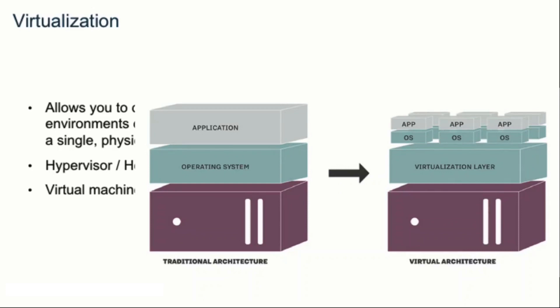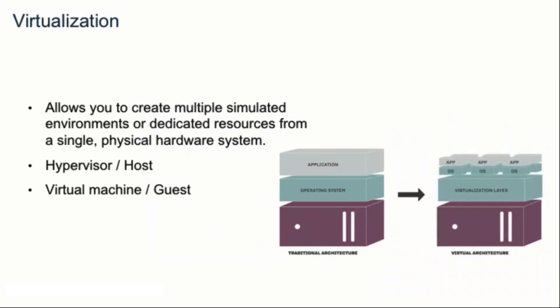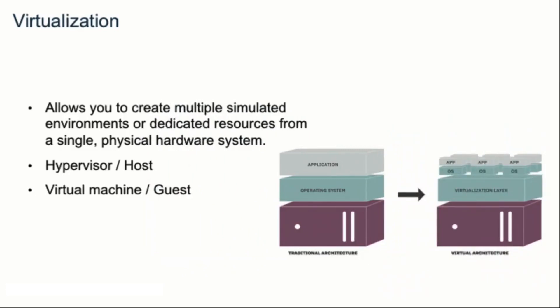On the right side of the image, you will see a virtual architecture where you have your hardware on the bottom. On top of that, you have your virtualization layer — this could be software. And on top of that, you have your OS and the application for every single virtual machine. So every single square that has OS and app on top will represent a virtual machine. For this virtualization layer, you have the hypervisor, also called the host — the machine that has the hypervisor installed on it.